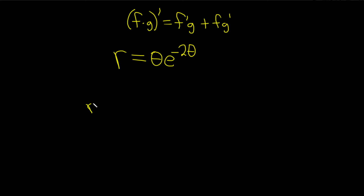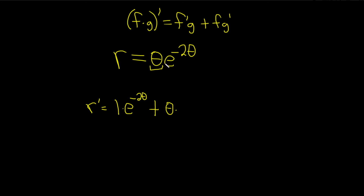So here is r prime. The derivative of the first is just the derivative of theta, which is 1, times the second, so e to the negative 2 theta, plus the first — so theta — times the derivative of the second.